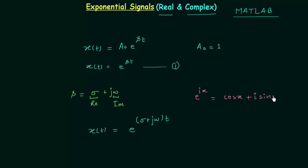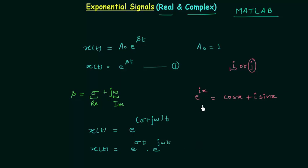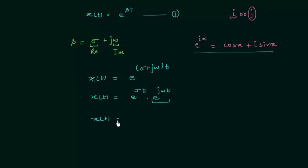We know Euler's formula: e raised to power ix is equal to cos x plus i sin x. In mathematics we use i to represent the complex number, but in electronics we use small i to represent AC current, so it is better to use j. We can write x(t) as e raised to power sigma t multiplied with e raised to power j omega t, and from Euler's formula e raised to power j omega t equals cos omega t plus j sin omega t. So x(t) equals e raised to power sigma t multiplied with (cos omega t plus j sin omega t).